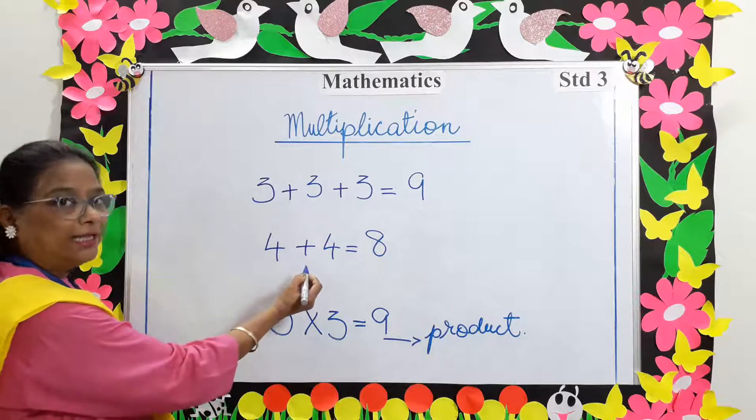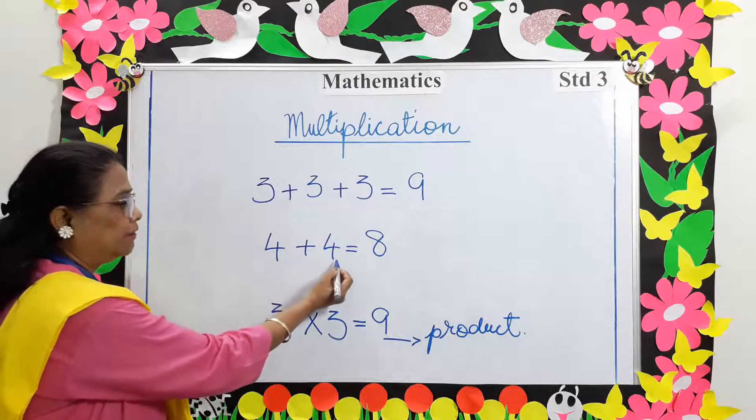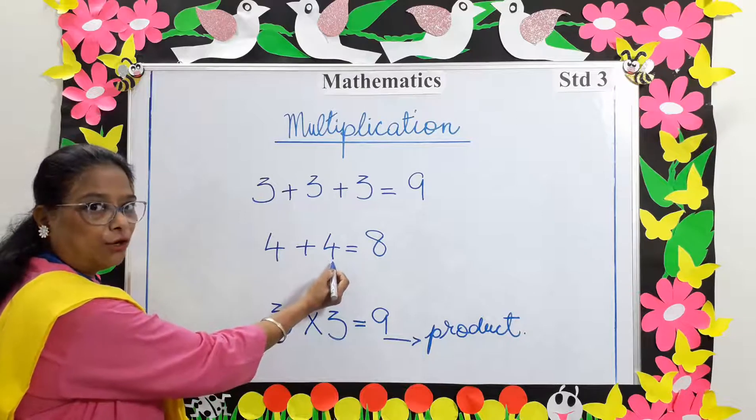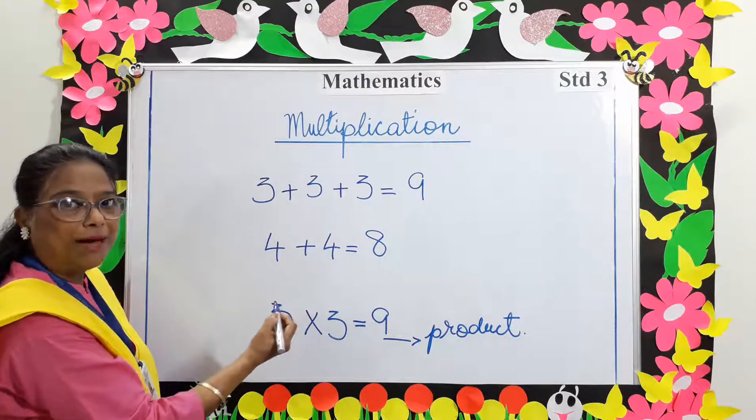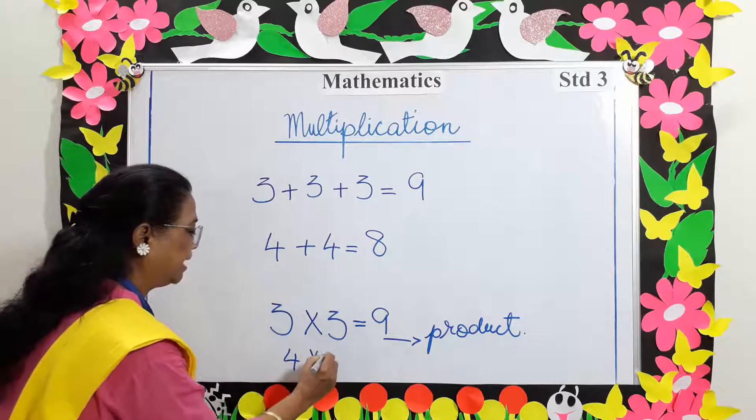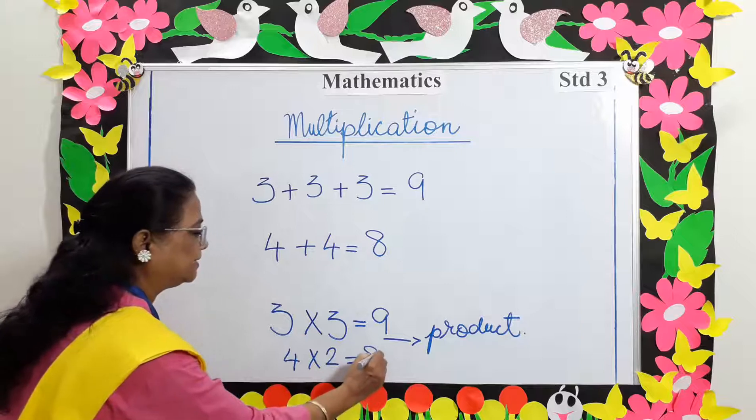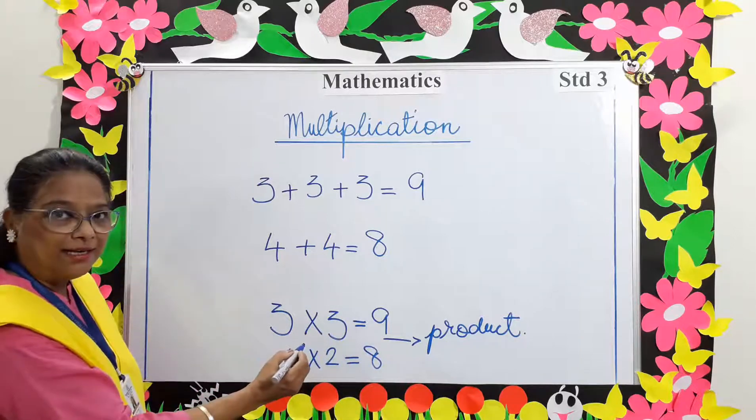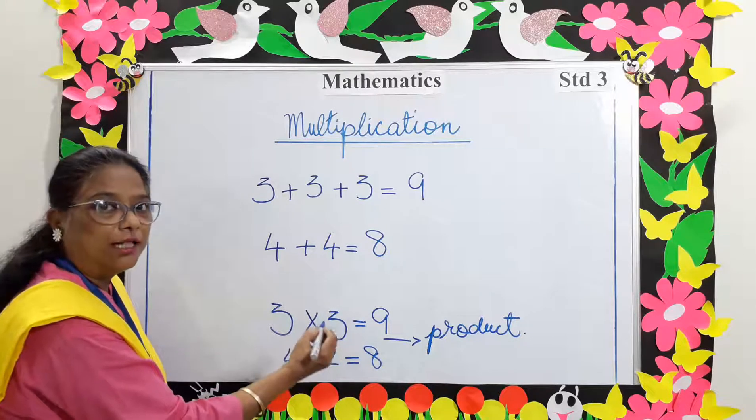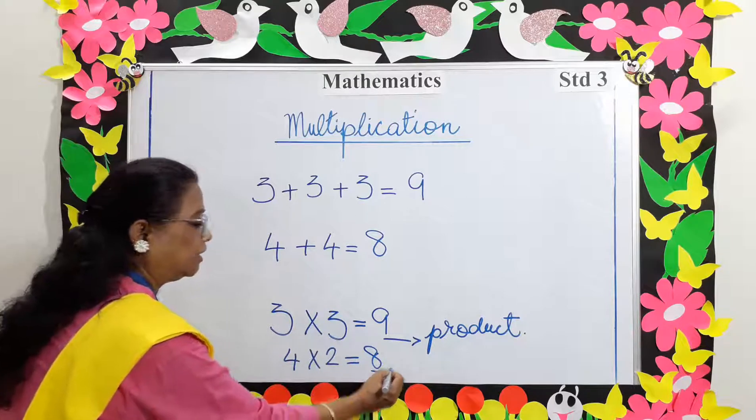Take another example. 4 is added twice, so you multiply 4 by 2. 4 multiplied by 2 also equals 8. 8 is the answer and called the product.